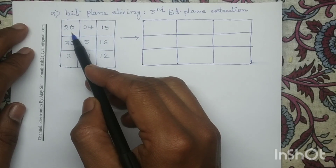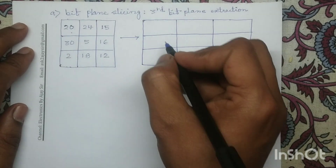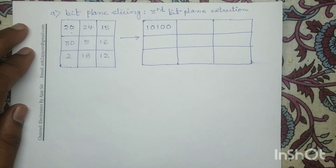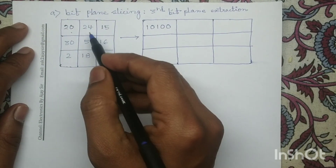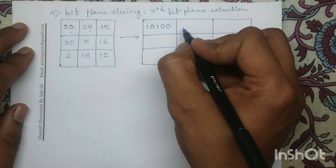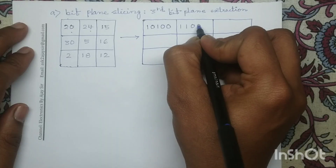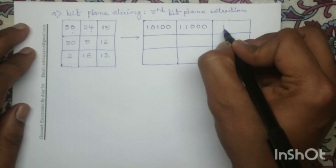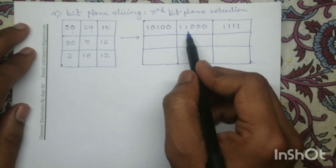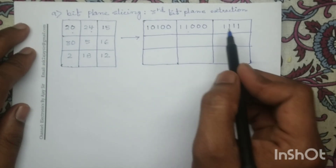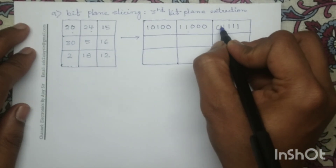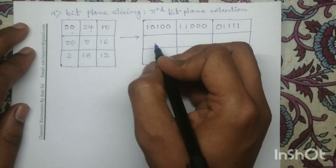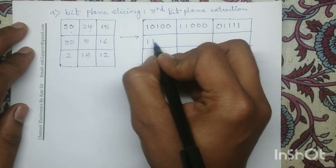For example, 20 in decimal is equivalent to 10100 in binary format. Similarly, decimal number 24 is equivalent to 11000 in binary format. For 15, the binary equivalent is 1111, but since the previous number used 5 bits, in order to write 15 I will also use the 5-bit format, so I will write 01111. For decimal number 30, the corresponding binary representation is 11110.